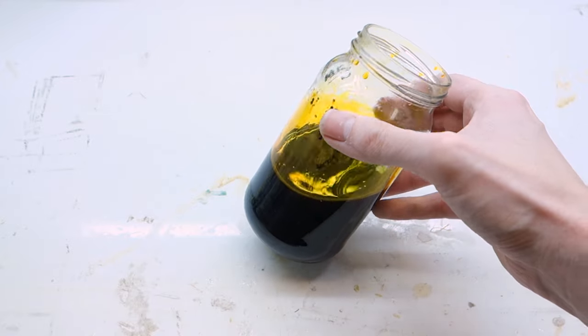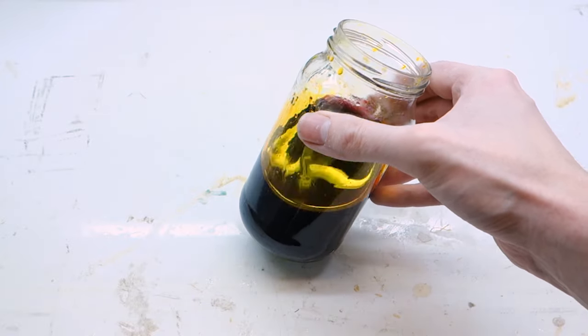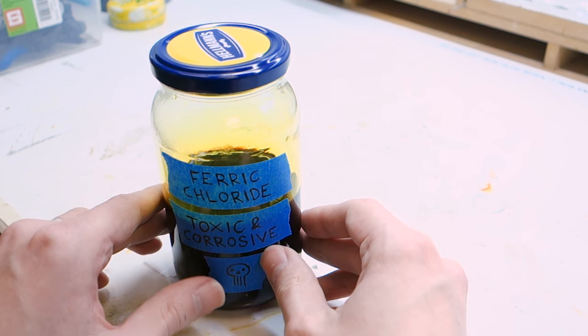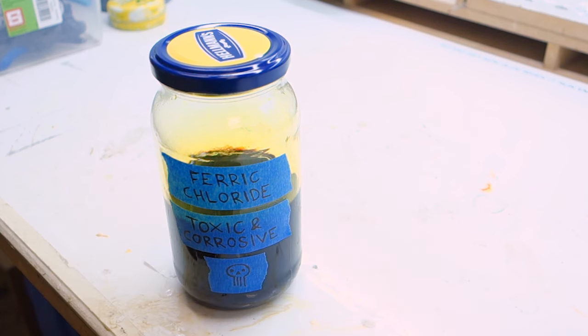Once the solution is ready, make sure you label your container appropriately, especially if you're working in a shared space. Even though ferric chloride is a reasonably weak acid, it's still not something you want to interact with unknowingly.